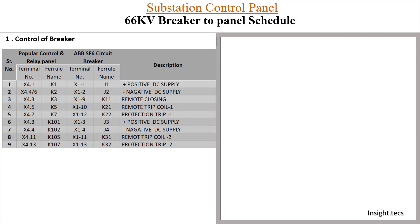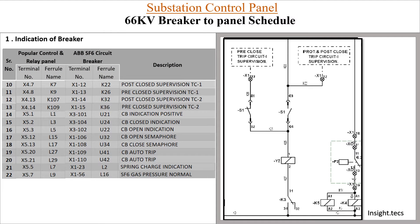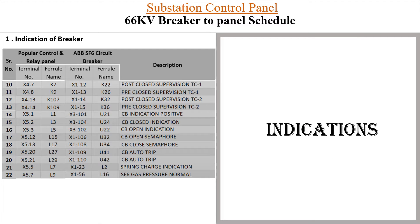For control of the breaker, we covered points one to nine. Basically, control means turning on and turning off of the circuit breaker, and what kinds of wirings are done for that. Second is the indication of the breaker: post close supervision, breaker open indication, breaker close indication, breaker close semaphore, and spring charge indication. These are the basic indications of operation of the breaker. Now let us continue in this section further.